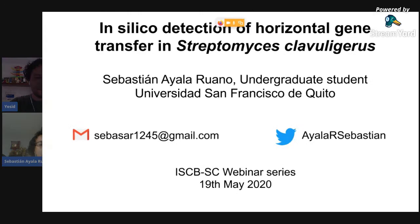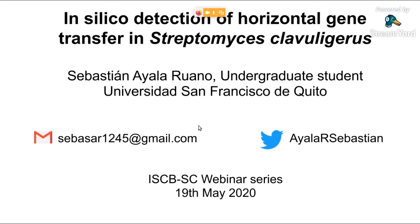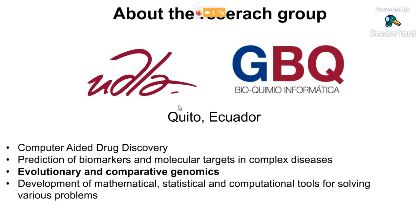Thank you. Hello everyone. Thanks to the ISCB Student Council for the opportunity to share my research project. I am a biotechnology undergrad student at Universidad San Francisco de Quito in Ecuador. I'm going to talk about a project called in silico detection of horizontal gene transfer in Streptomyces clavuligerus. I contributed to this project during a summer internship at Grupo de Bioquímica Informática, which belongs to the Universidad de las Américas at Quito, Ecuador. This research fits in the third research area: evolutionary and comparative genomics.